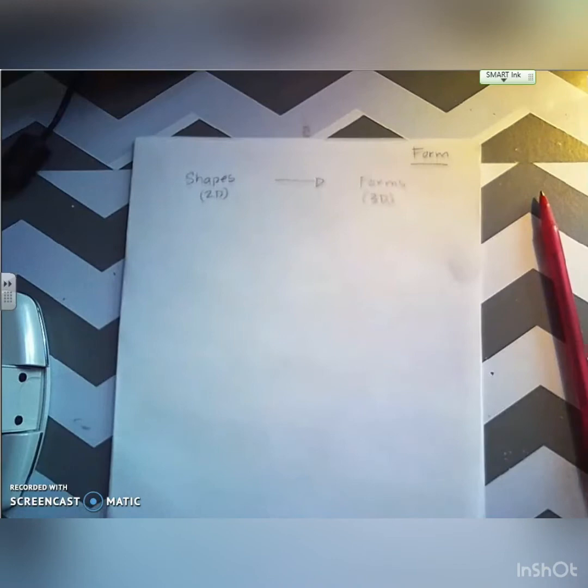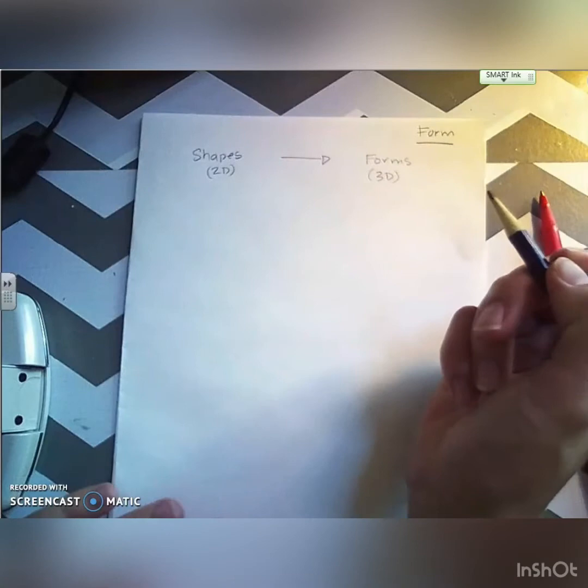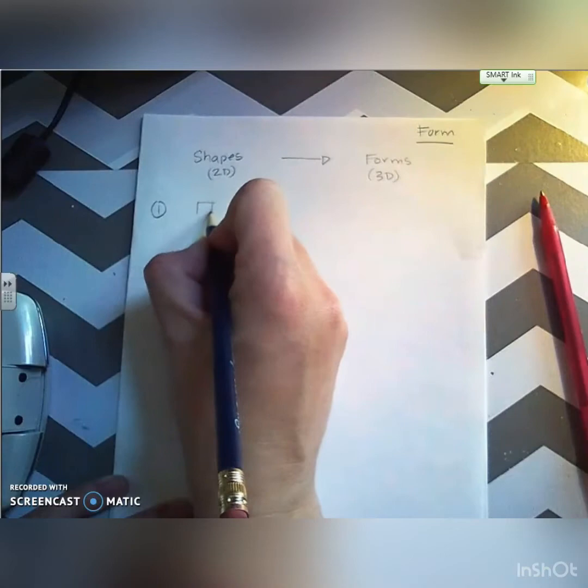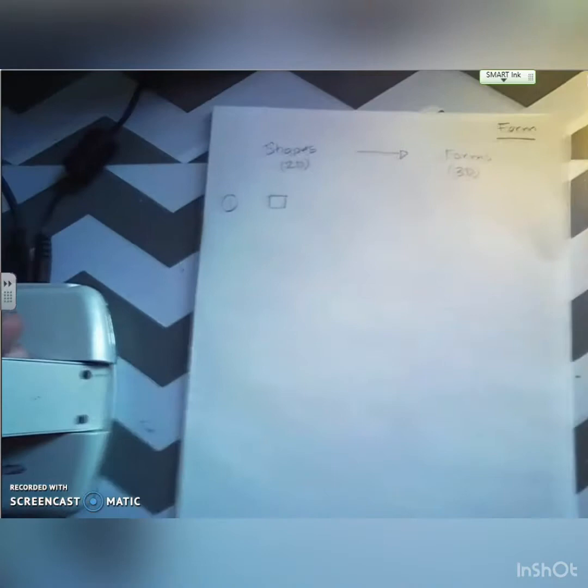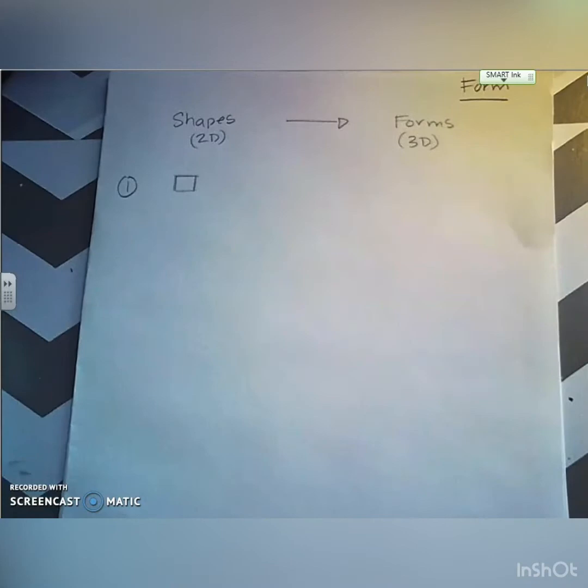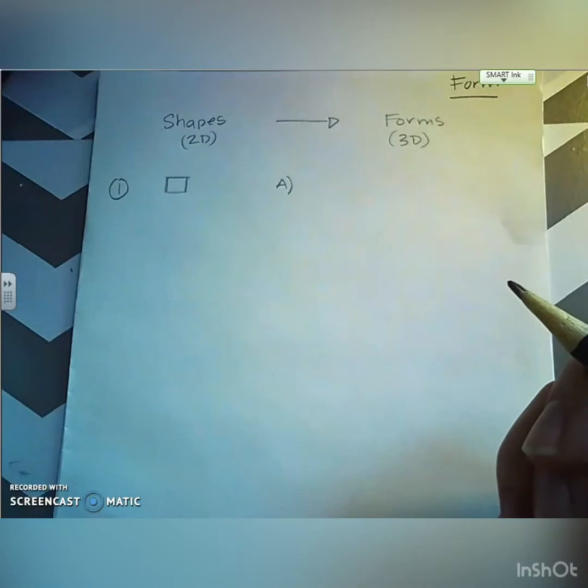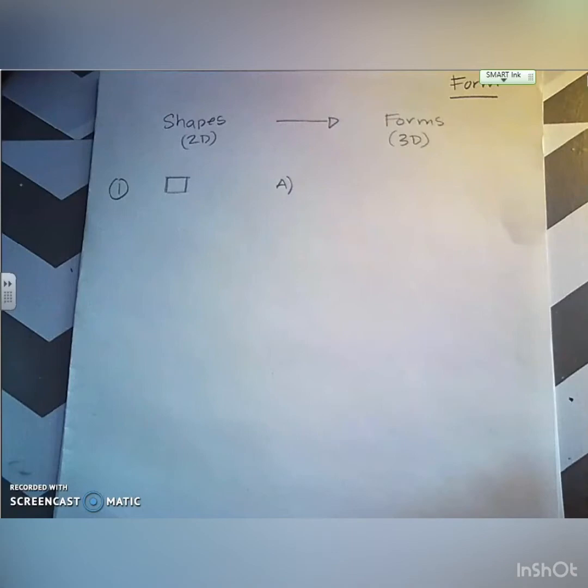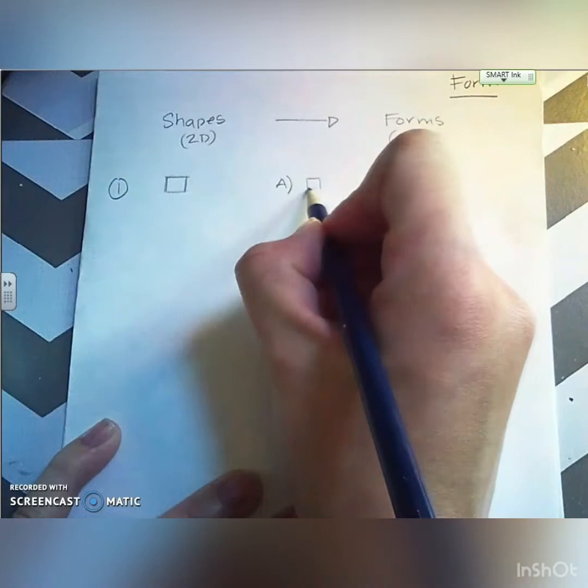Now the first shape we're going to look at, and I want you to draw along with me, and you can pause the video at any point. The first one we're going to look at is a square. So do your best to draw four even sides to create a square. I'm going to have you start by making an A, because I'm going to teach you two different ways. Who can raise their hand and tell me what is going to be the name of a square that's three-dimensional? Cameron. A cube! Is she correct? Yeah, good job. We're going to take this simple square and turn it into a cube.